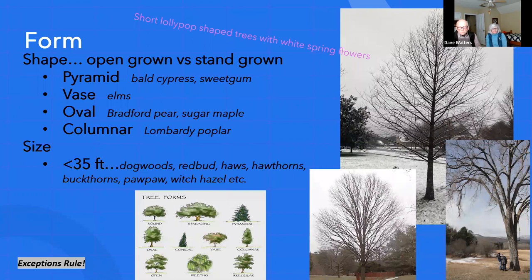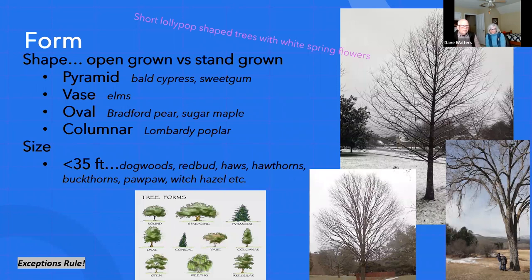The next thing is form. If I say think of a short lollipop-shaped tree with white spring flowers, everybody will know that. We tend to know those by shape. Bradford pear is a lollipop-shaped tree. But most trees you can't identify the species just by shape alone — though for some you can get there very quickly.